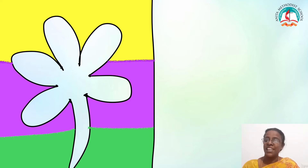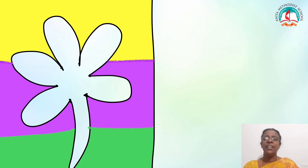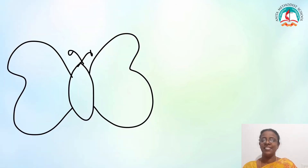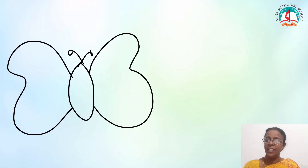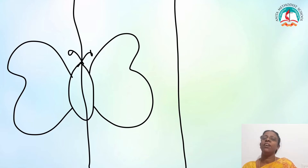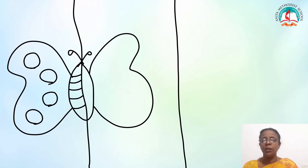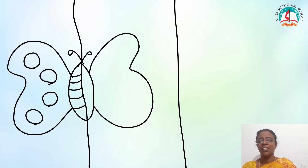Now we will try both positive and negative space art in the same picture. Divide it into two equal halves. On the left hand side, draw some round patterns on the wings and striped lines on the body.